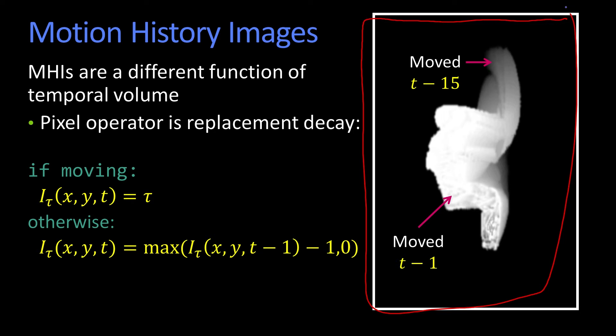But then, when you do that, you get this very simple operation. If a pixel is moving, set that location at time t to some maximum value tau. And you're going to pick tau. Maybe tau is 15. I'll tell you why 15 in a minute. And if it's not moving, that's the otherwise, I'm just going to decrement the value from the previous time. But I don't go any less than zero.